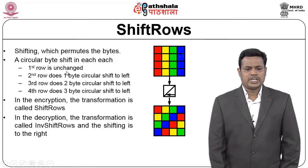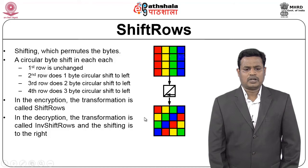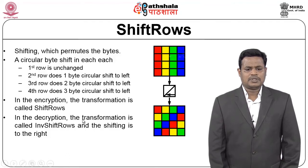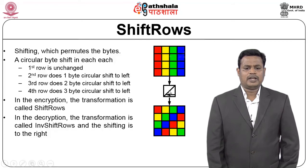The first row is unchanged. In the second row there is one byte circular shift to the left — the red is shifted left, blue goes to green's place, green to yellow's place, yellow to red's place, and red goes back to blue's place. The third row does a two-byte shift, and the fourth row a three-byte shift. In encryption this is called Shift Row; in decryption it is called Inverse Shift Row, shifting to the right to recover the original message.